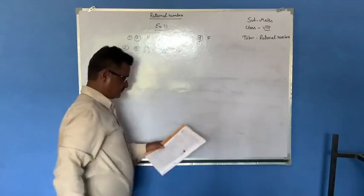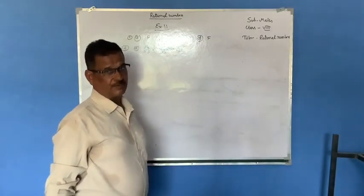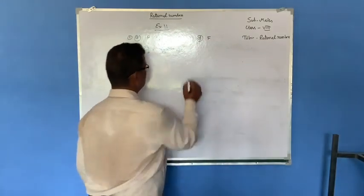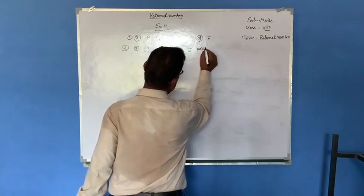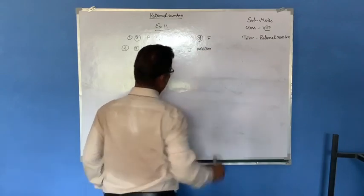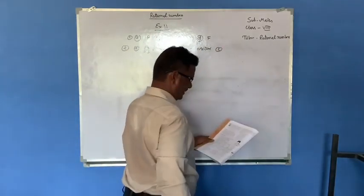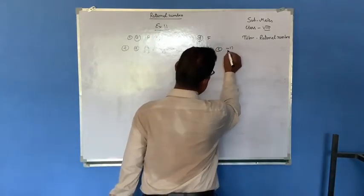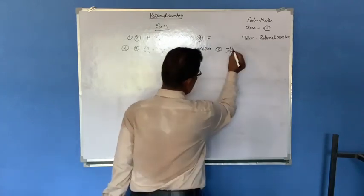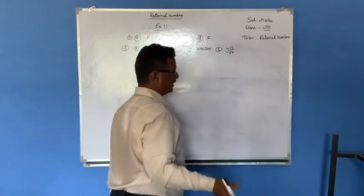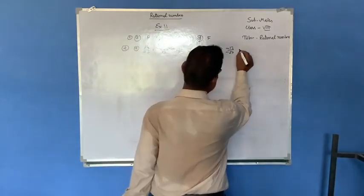B given: 11 by 23 — both are positive, so it is positive. C given: minus 12 by minus 27 — both are negative, so same sign, and as I told you, both having the same sign means positive. So this is also positive.